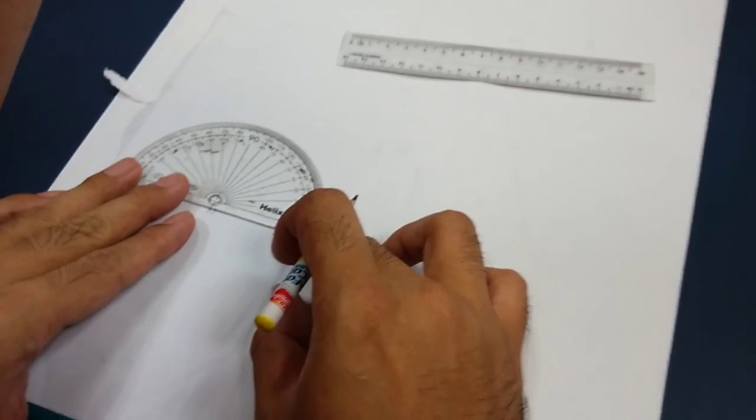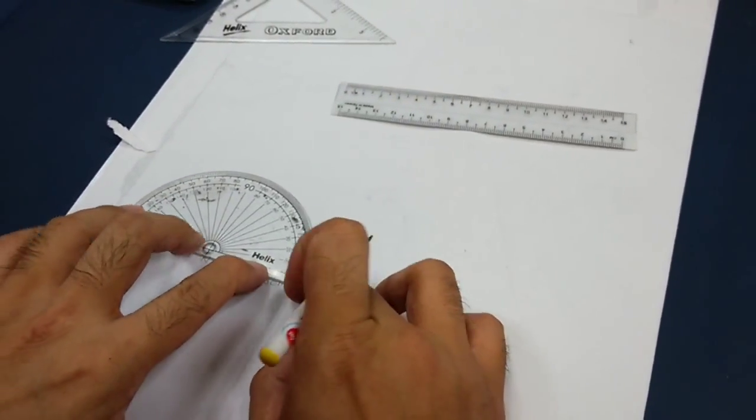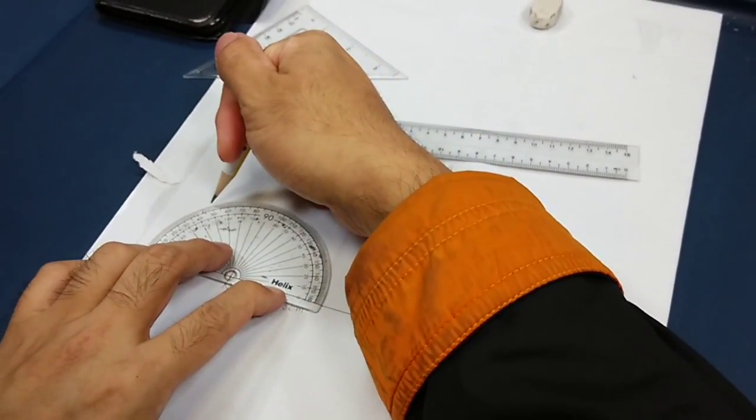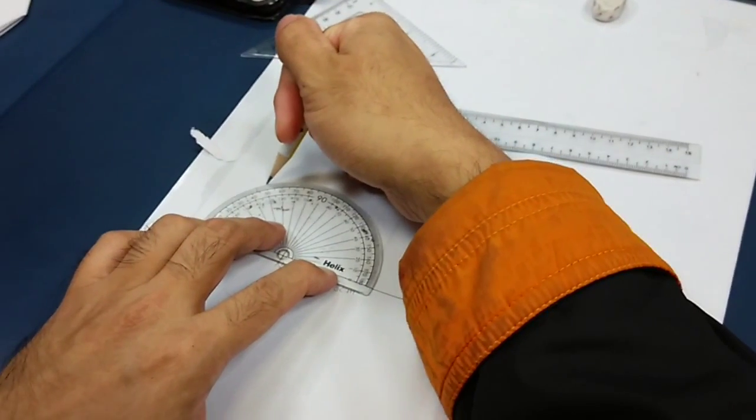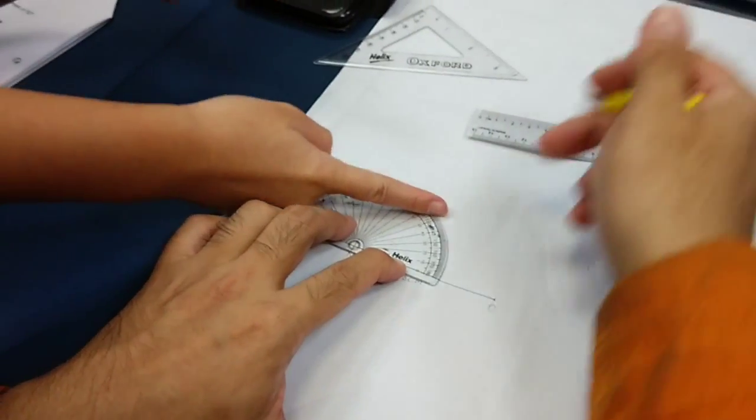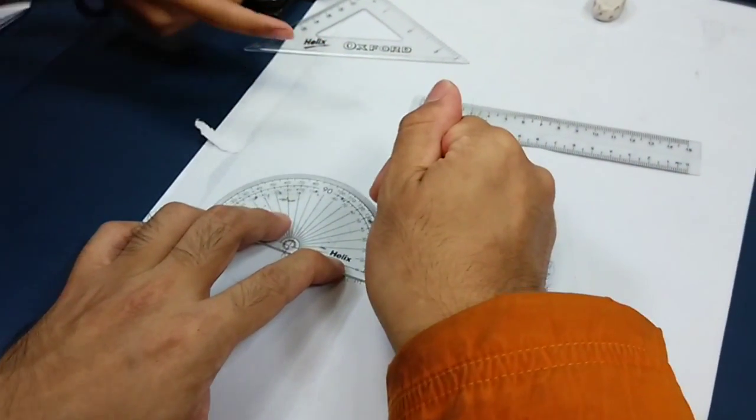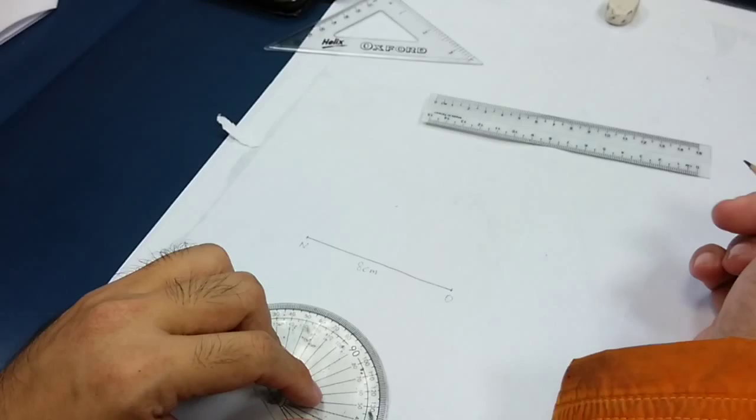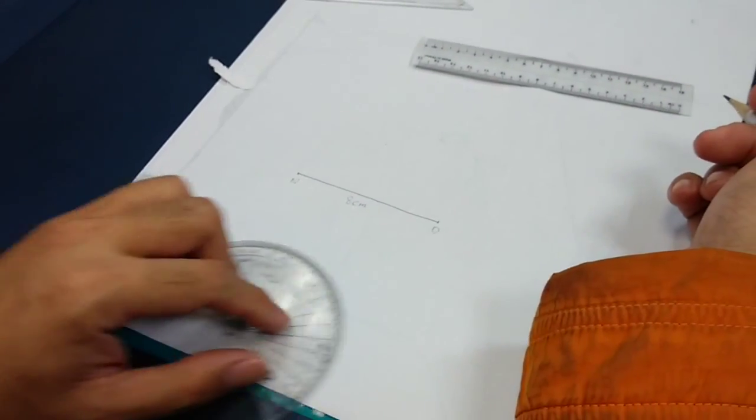Okay. Draw how big is the angle? 50 degrees. Yes, 50 degrees. 50 degrees is here. Should be here. Yes. Can you see? Yes. Can you see? Yes.